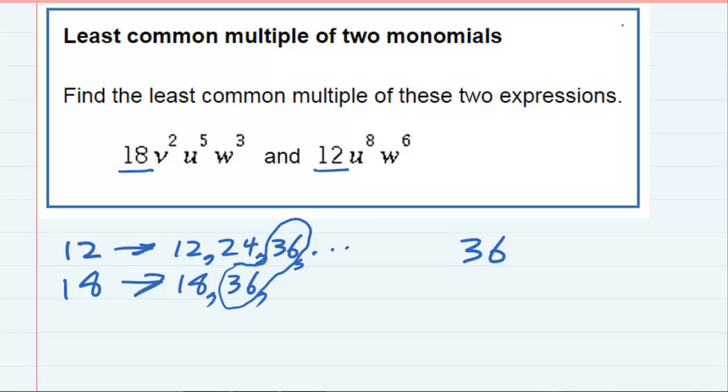But then looking at the variables, we see v's, u's, and w's, so as long as I have each one of those represented with its highest power, then that will be the lowest common multiple. So there's only one v between these two, and it is v to the second.